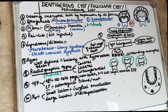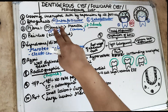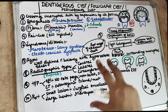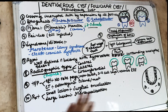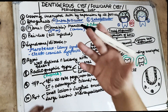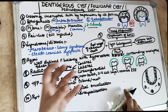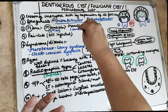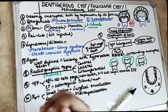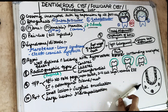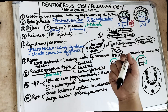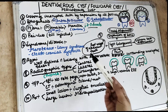Talking about the demographics: the second and third decade of life is when the Dentigerous cyst is most frequently seen. Both sexes are involved. The cyst is seen more in the mandible and less in the maxilla, because the Dentigerous cyst is associated with impacted teeth. The most common impacted teeth are the mandibular third molar and the maxillary canine. So the Dentigerous cyst is most frequently associated with the mandibular third molar, and in the maxilla, it is associated with the canine.